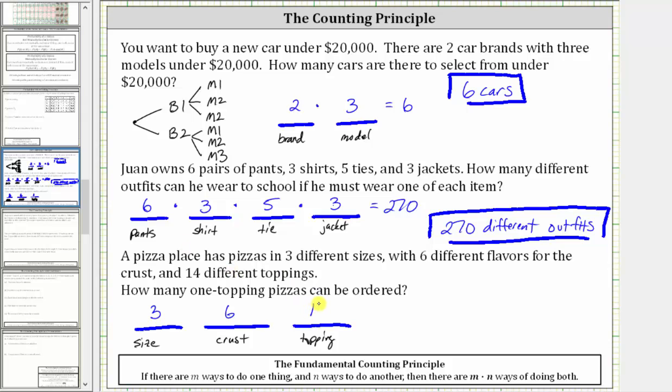Which means the number of one-topping pizzas is equal to three times six times 14, which is equal to 252. There are 252 types of one-topping pizzas.